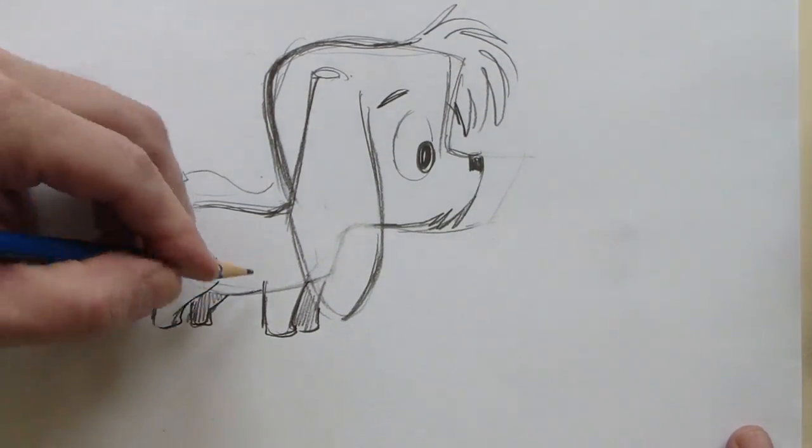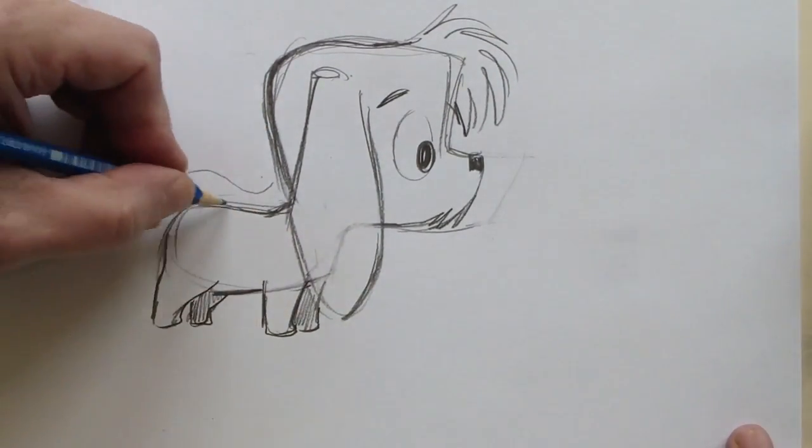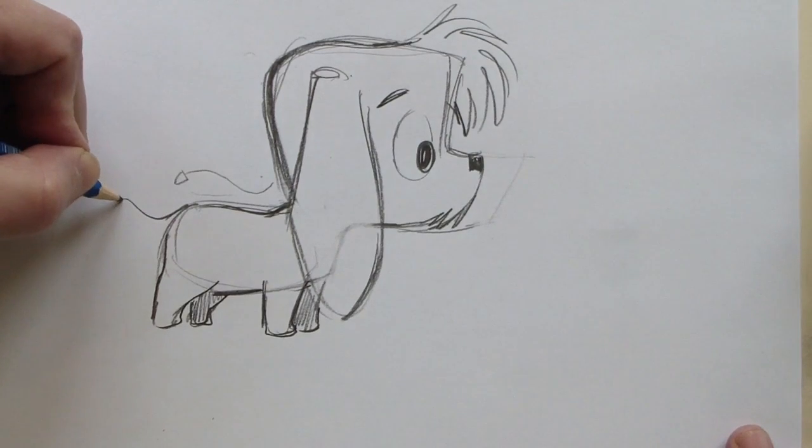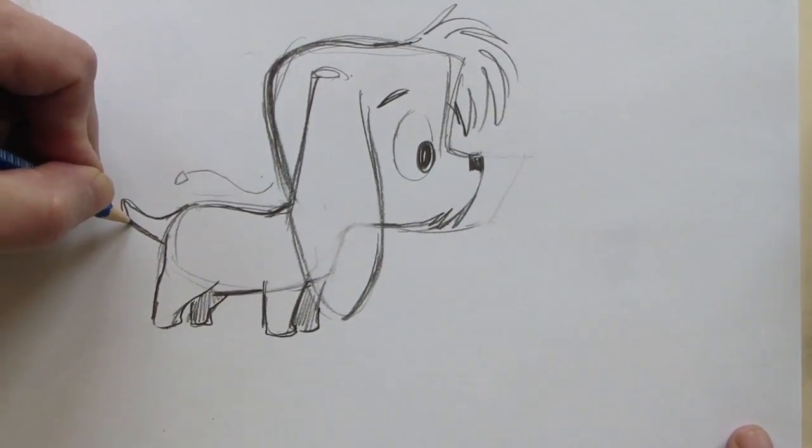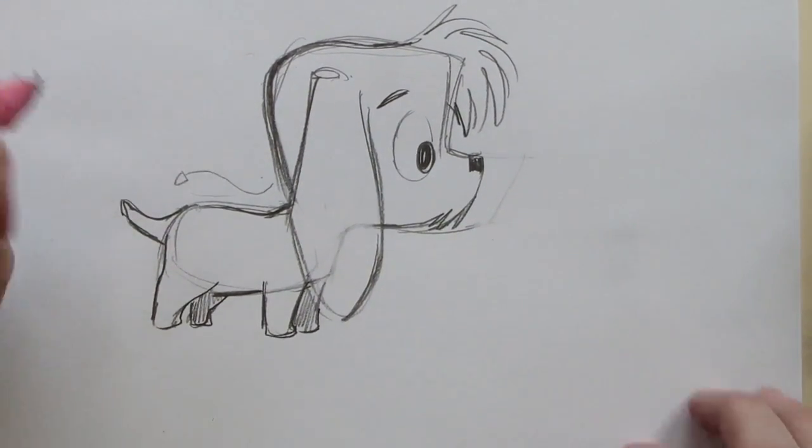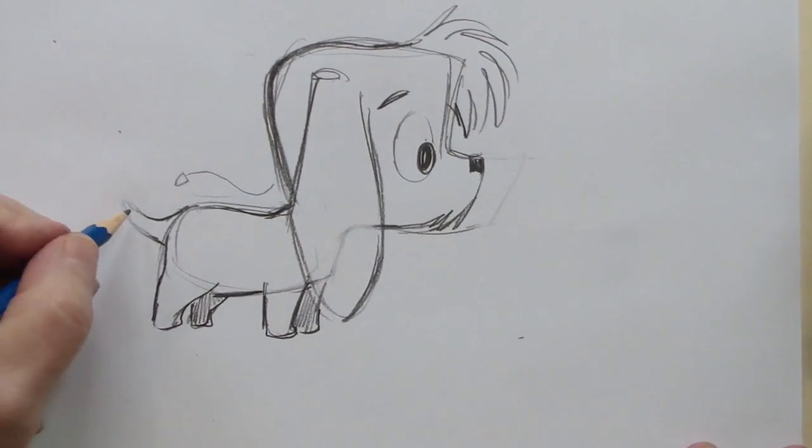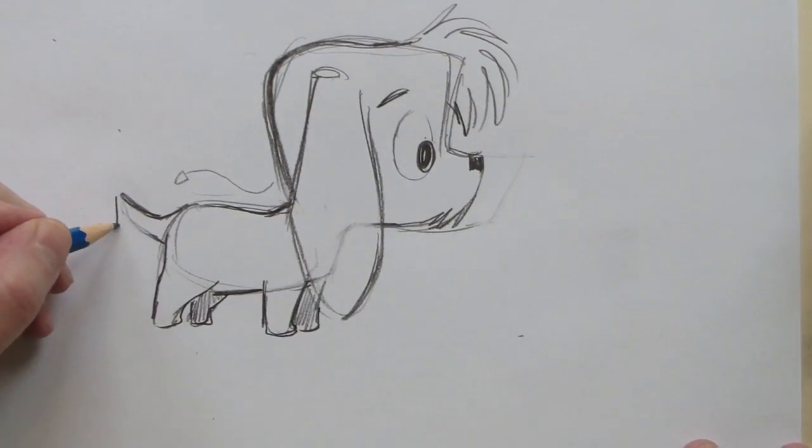And the back legs are going to be darkened a little bit to give it a little bit of perspective, so we can see what's what, where they are, with some depth. You could give them a little floppiness here on the tail as well.